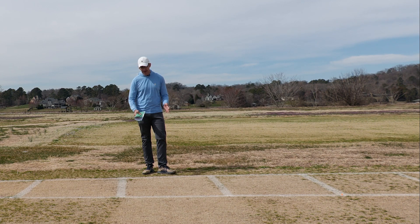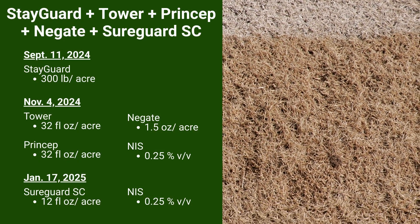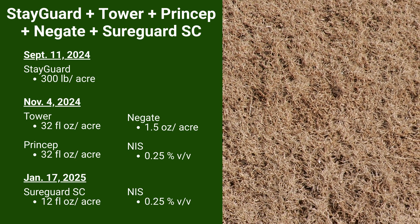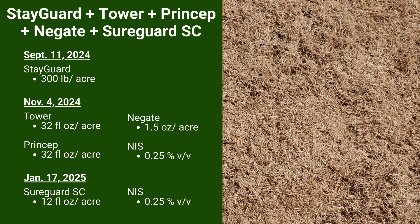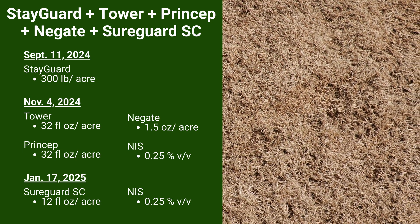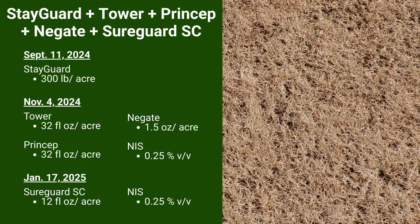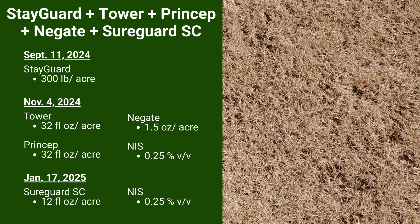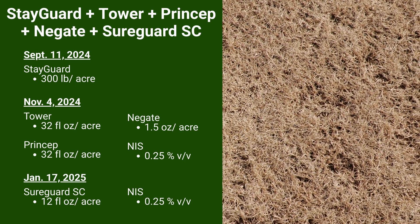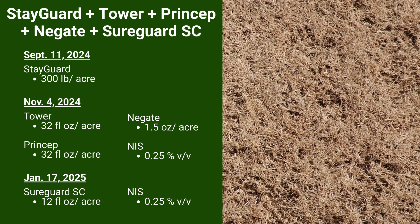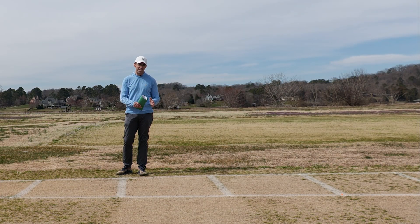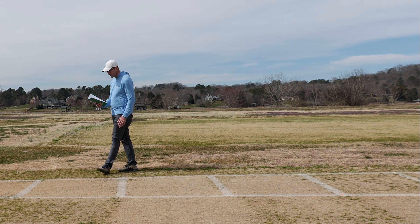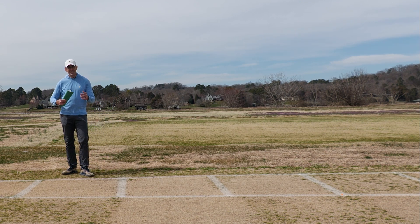Now we build on that Stayguard program further. We have a Stayguard application in September, come back 60 days later with our Tower, Princep, and Simazine treatment, and then 60 days after that — in mid-January — we apply Sureguard. Sureguard is the same active ingredient as Stayguard but applied as a liquid, so it can be applied per label when bermudagrass is dormant. That helps control anything that broke through the previous two applications and introduces additional soil residual to provide protection from January through the rest of the springtime.